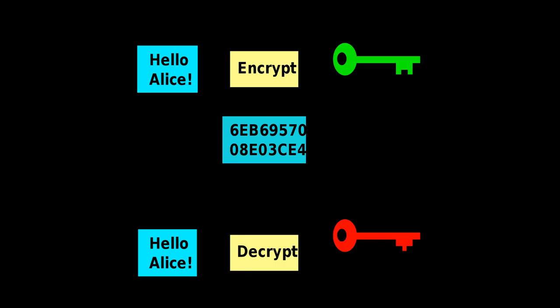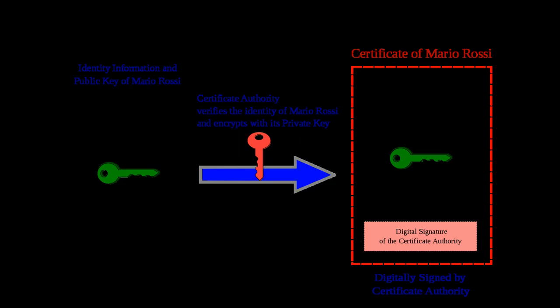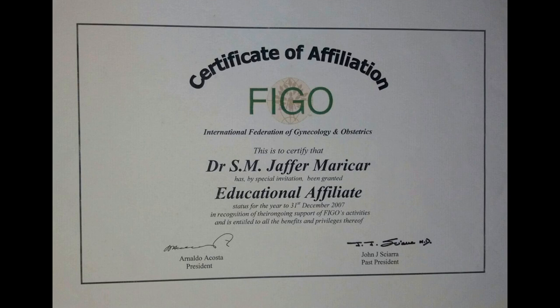Aside from the resistance to attack of a particular key pair, the security of the certification hierarchy must be considered when deploying public key systems. Some certificate authority — usually a purpose-built program running on a server computer — vouches for the identities assigned to specific private keys by producing a digital certificate. Public key digital certificates are typically valid for several years at a time, so the associated private keys must be held securely over that time. When a private key used for certificate creation higher in the PKI server hierarchy is compromised or accidentally disclosed, then a man-in-the-middle attack is possible, making any subordinate certificate wholly insecure.